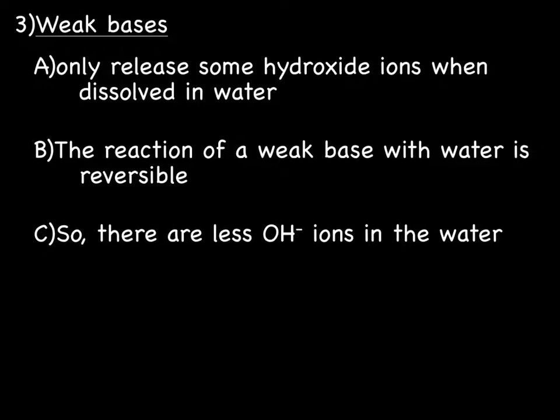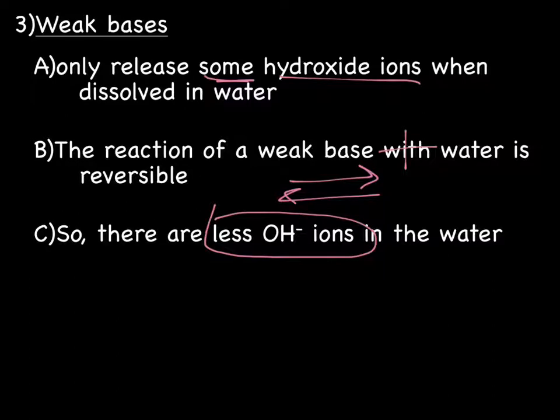We also have weak bases. Weak bases only release some hydroxide ions when dissolved in water. However, the reaction of a weak base with water is going to be reversible, so we're going to have the two-way arrows. And this is going to lead to less OH minus ions in the water, thus a weaker base.